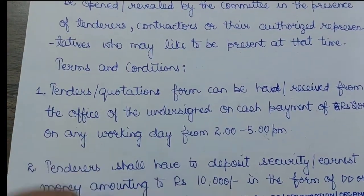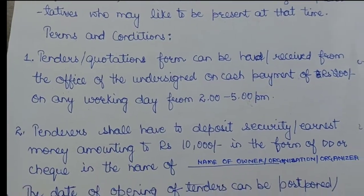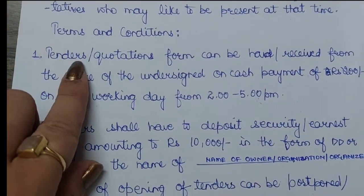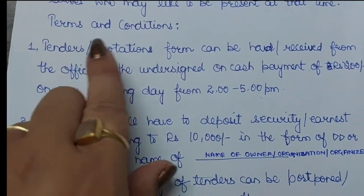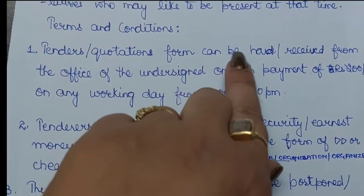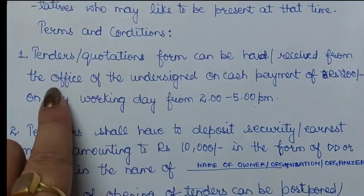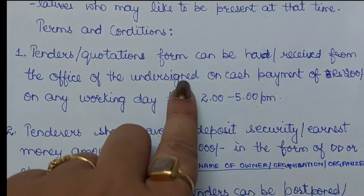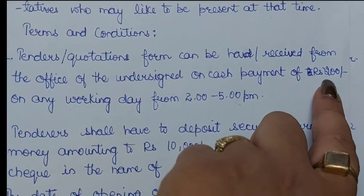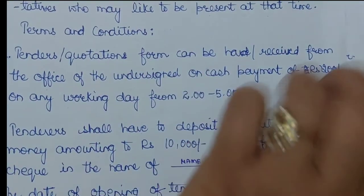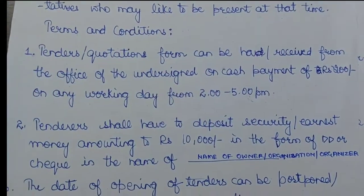Now comes the terms and conditions — this is the important and tricky part, which you should learn at home beforehand. Tender/quotation forms can be had — meaning they can be received — from the office of the undersigned on cash payment of rupees [amount]. If no amount is specified, let it be 200. This is available on any working day from 2 to 5.